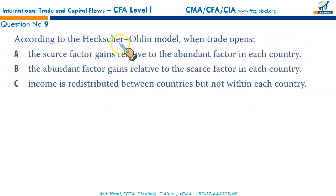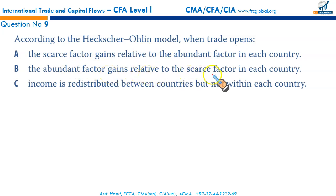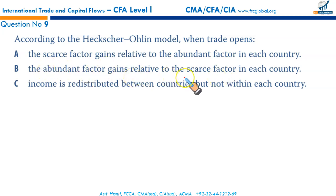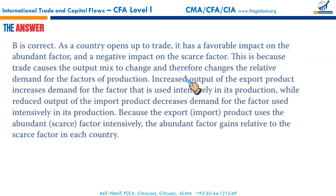According to the Heckscher-Ohlin model, when trade opens, the abundant factor gains relative to the scarce factor in each economy. In Germany, capital intensity per worker is higher, so capital gains. In Portugal, labor is abundant, so labor gains. The abundant factor gains relative to the scarce factor in each country — that makes B the correct option.